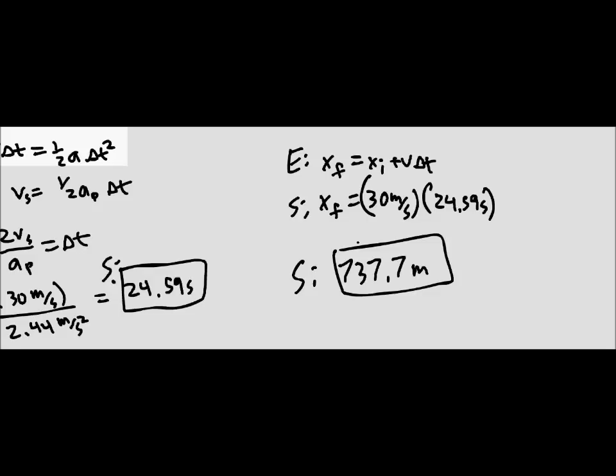This is also showing you how the transitive property can be used in these equations even when the equations aren't the same, so you can find how the objects are interacting. We're going to keep moving on to question number nine.